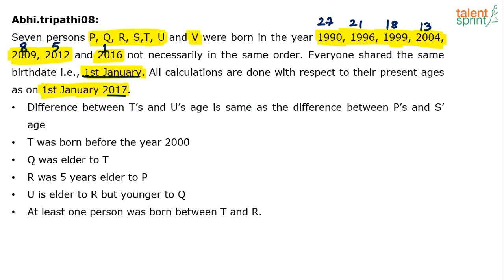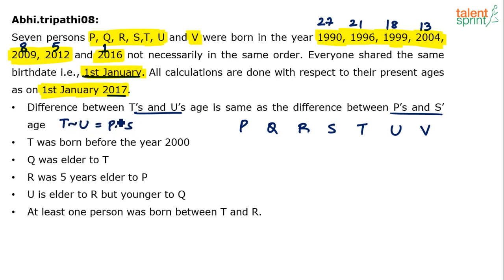We have persons P, Q, R, S, T, U and V to assign to these age values. Looking at Clue 1 — the difference between T and U equals the difference between P and S — this is not a good starting point because multiple values are possible for each person. So let's leave it and move to the next clue. When doing these arrangements, always choose the easiest clue to start with.